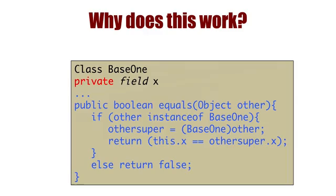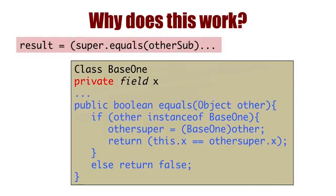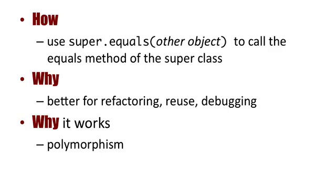And finally, why does this work? You may not have picked up on it, but we used a SubTwo object as the parameter for the equals method of the superclass. Certainly, it will make the call because all objects will qualify as type object. But is it an instance of a BaseOne object? It is. Because of polymorphism.